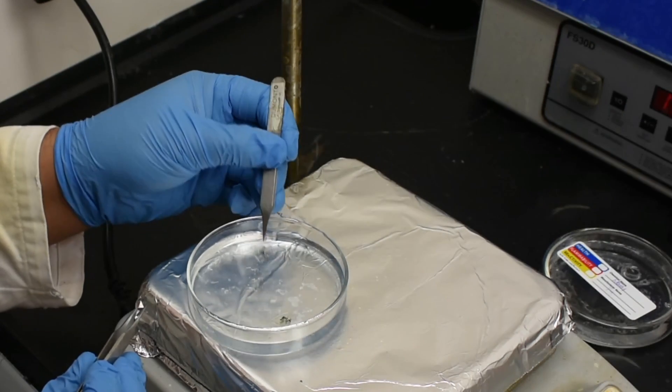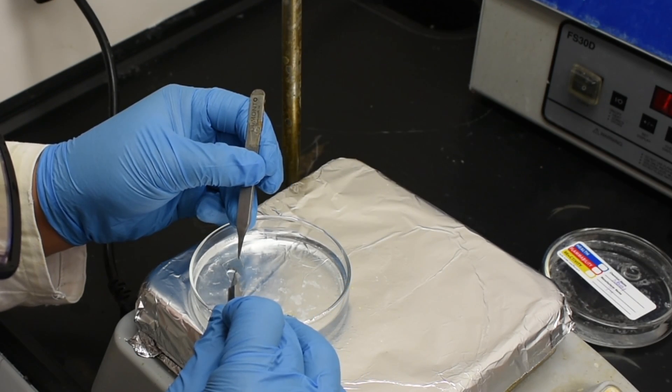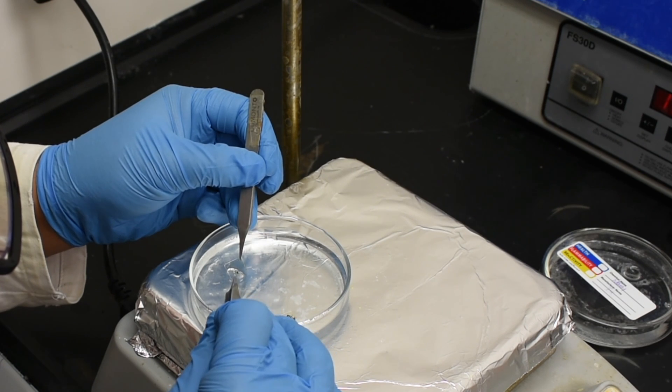Once signs of delamination begin, it is possible to use a second pair of tweezers to encourage the films to begin separating from the substrate.